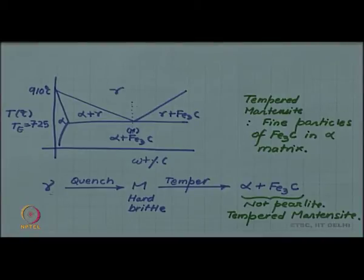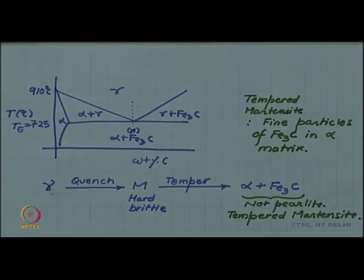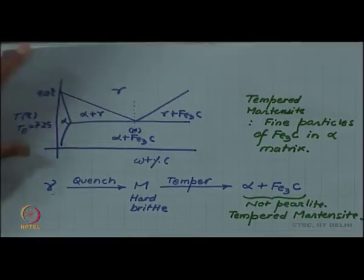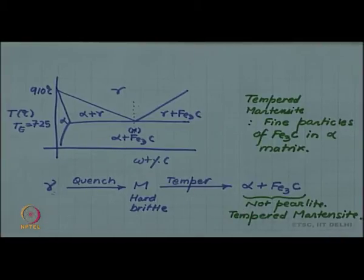What it achieves in terms of mechanical properties is that the hardness is reduced but at the same time brittleness is also reduced. Martensite was good because it was very hard but at the same time it was bad because it was brittle. For many engineering applications we cannot use a brittle phase like martensite. However, when we temper it, we are producing alpha plus Fe3C mixture and the distribution, the size and the distribution of these Fe3C particles in the alpha matrix will depend upon at what temperature and for how long you are tempering.